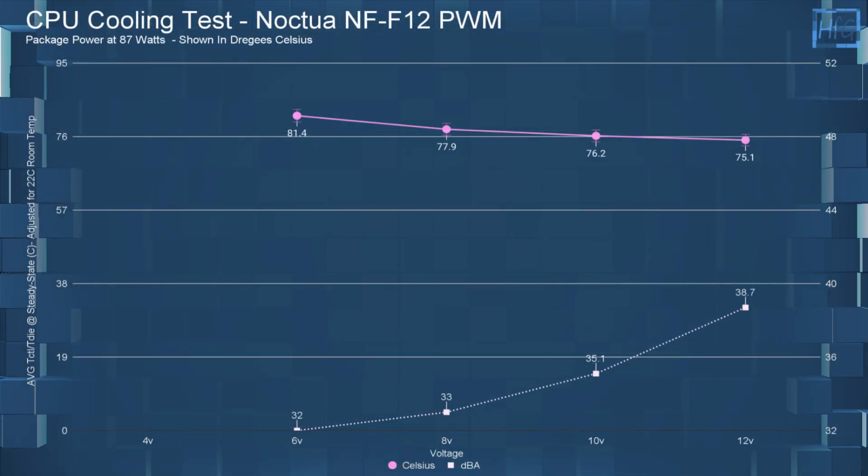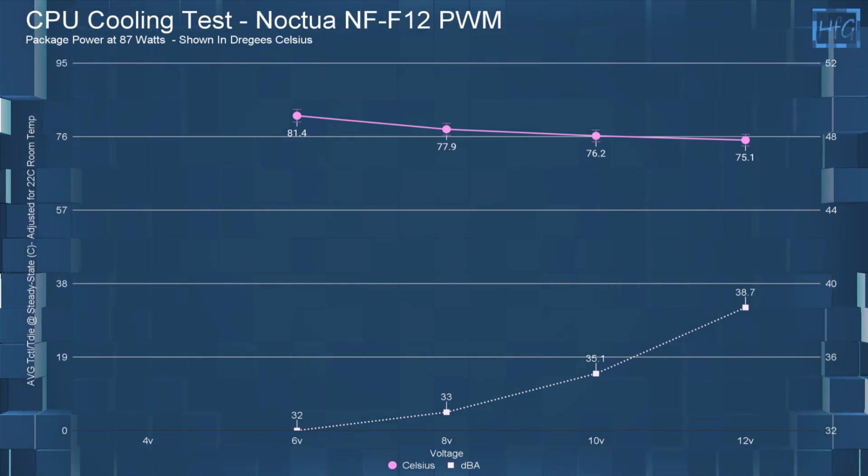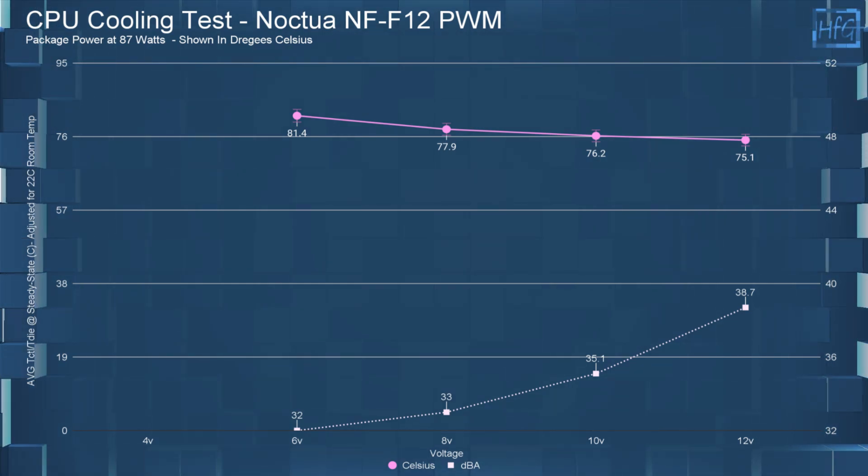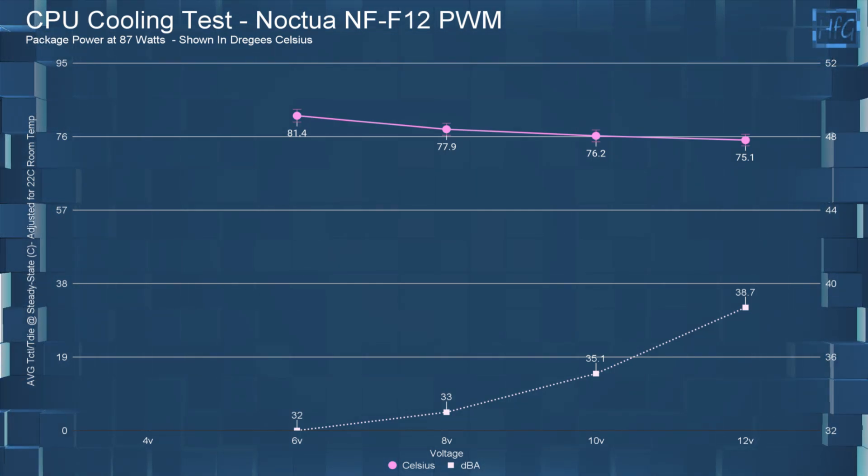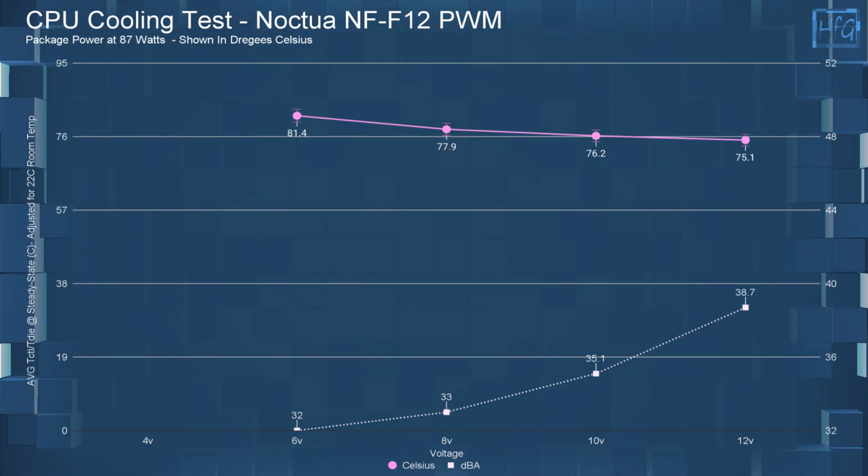Moving on to the CPU cooling performance. At 6 volts, the average CPU temperature was 81.4C. At 8 volts, it was 77.9C. At 10 volts, it was 76.2C. And at 12 volts, it was 75.1C.